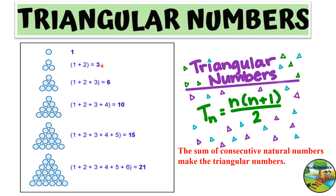Here you can see, as we have seen in the previous slide: 1, 3, 6, 10, 15, and so on, we are getting as triangular numbers. If you observe, there is a pattern in this — it is the sum of consecutive natural numbers — which is forming the triangular numbers. The formula is n into (n plus 1) by 2.